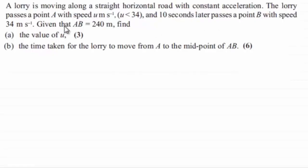The lorry passes a point A with speed of u meters per second where u is less than 34, and 10 seconds later passes a point B with a speed of 34 meters per second.